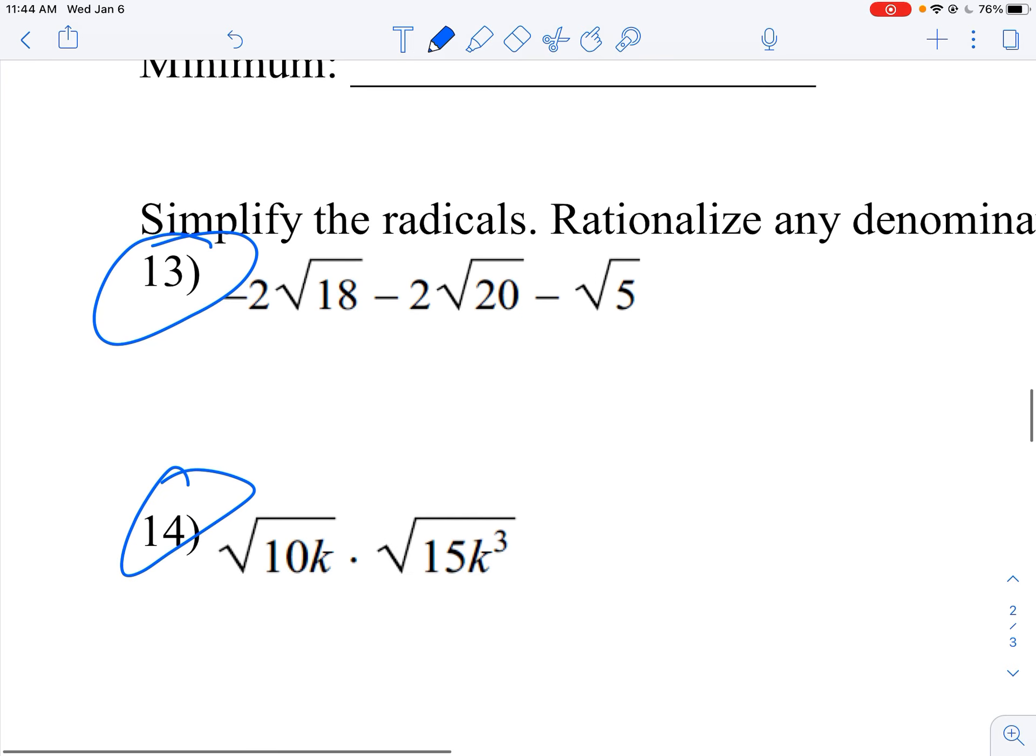So simplifying radicals. If you have to add or subtract them, you do have to simplify these first. So do some factoring. 18 is 9 times 2, 9 is 3 times 3, so I can pull a 3 out. And this first term is going to turn into negative 2 times 3. And then inside what's left over is just that 2. So this turns into negative 6 root 2. So that's the first part simplified.